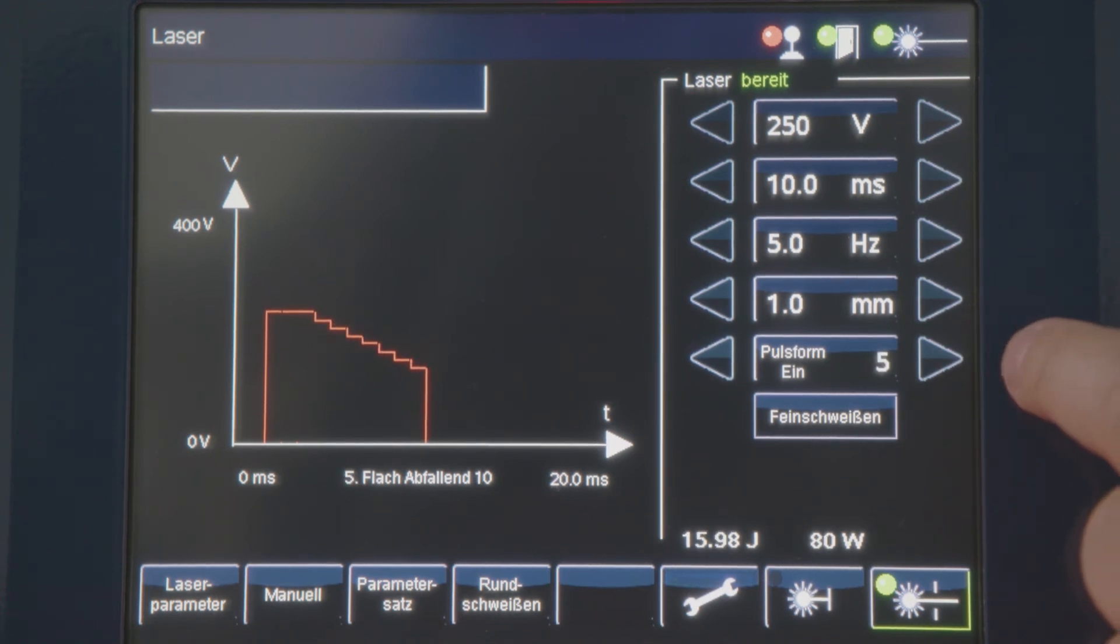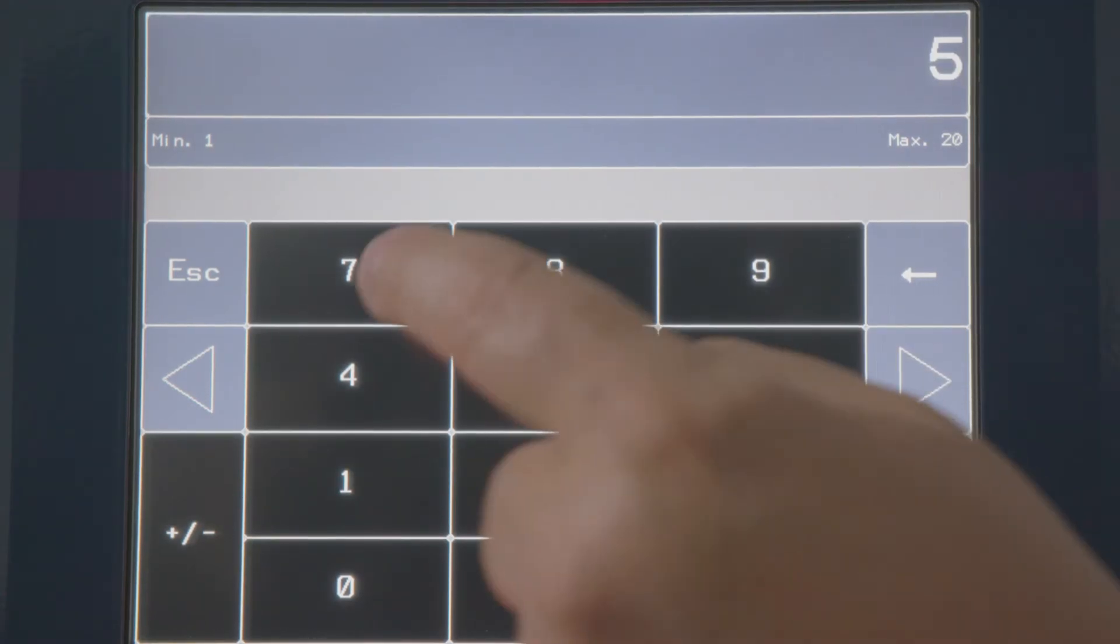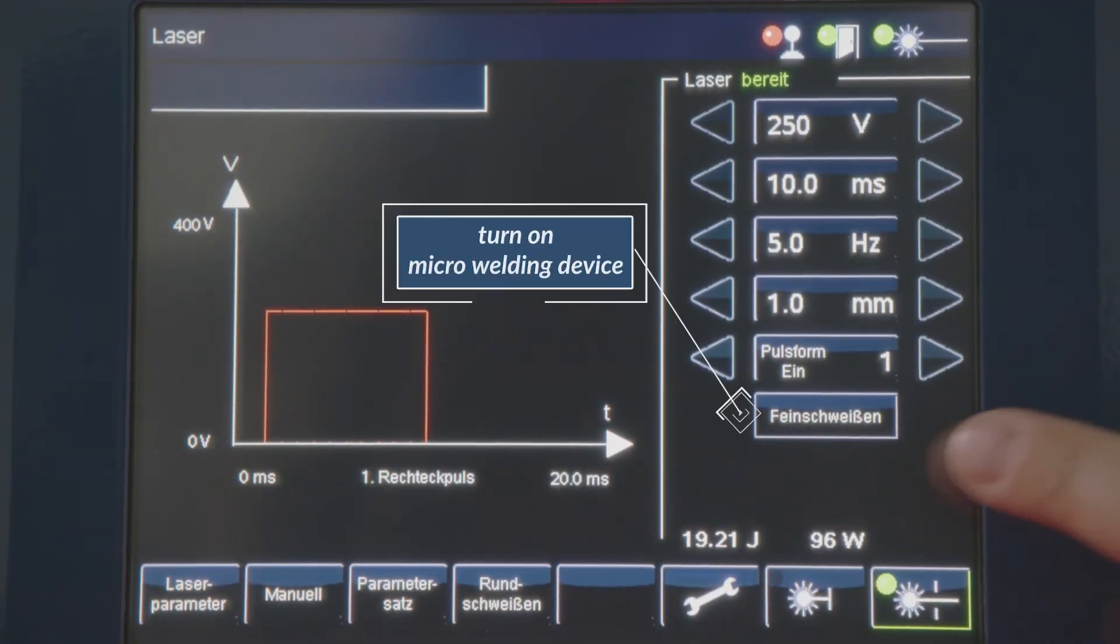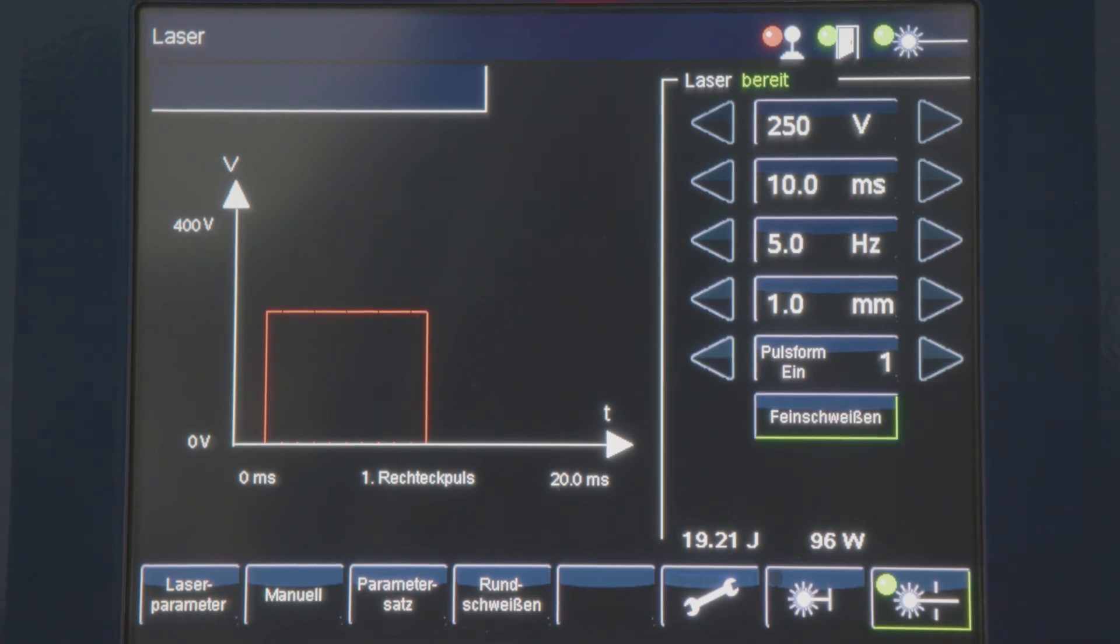For sensitive or very thin or fine components, the use of the fine welding function is recommended. This allows to produce weld spots smaller than 100 micrometers.